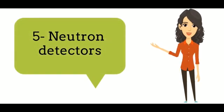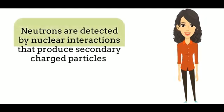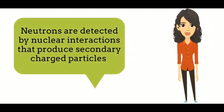The fifth type of detectors are the neutron detectors. Neutrons are chargeless, so hard to detect.